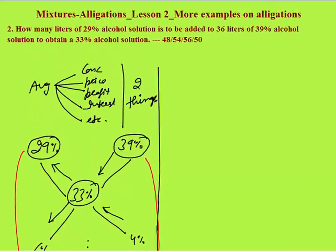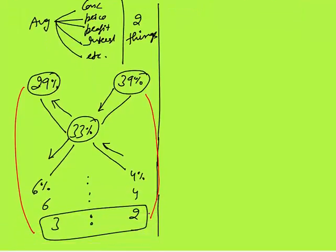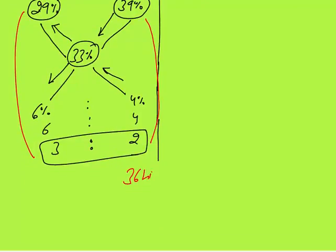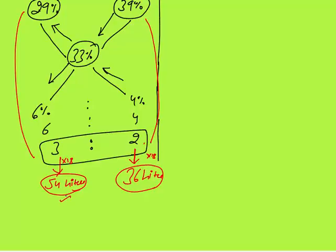Now, what was the question? How many liters of 29% mixed with 36 liters of 39% solution? This 39% is given as 36 liters. The ratio is 3 is to 2. Ratio means if this is 3 liters, this must be 2 liters. When 2 liters is 36, 3 must be how much? 2 into 18 is 36, so 3 into 18 should be 54 liters. If this is 54 liters and 39% is 36 liters, then only the ratio will be 3 is to 2. So the 29% alcohol solution should be 54 liters to get a 33% solution.